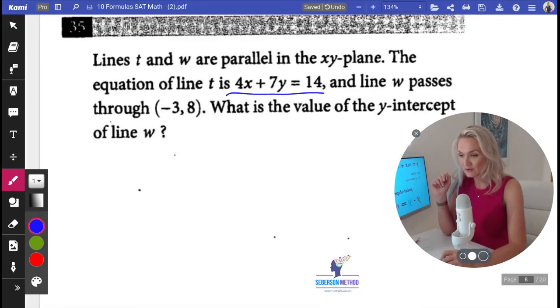And they're telling you that this line and line W are parallel. What does that mean? They're going to have the same slope. And then they're telling you that W passes through point negative 3 comma 8. What is the value of the Y intercept of line W?